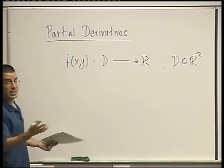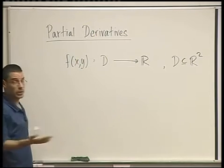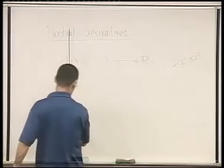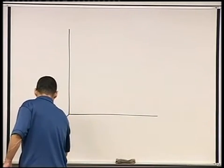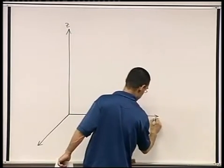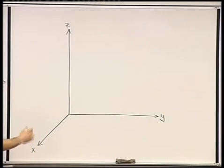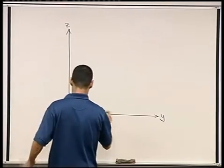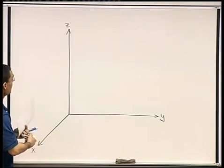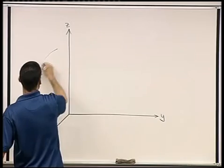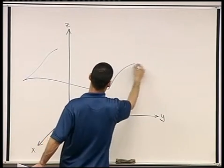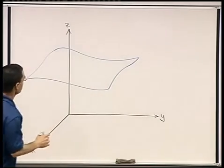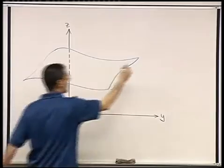Before we write any definitions, let's try to figure out what's going on — what do we expect. Let me draw a big picture. Here's three-dimensional space. We have some domain down here on the floor, and we have the graph of the function living up here — some graph that looks something like this. This is the graph of our function f of x, y.